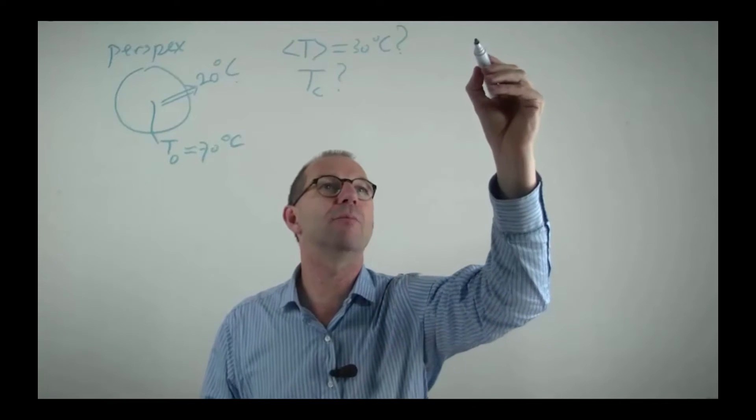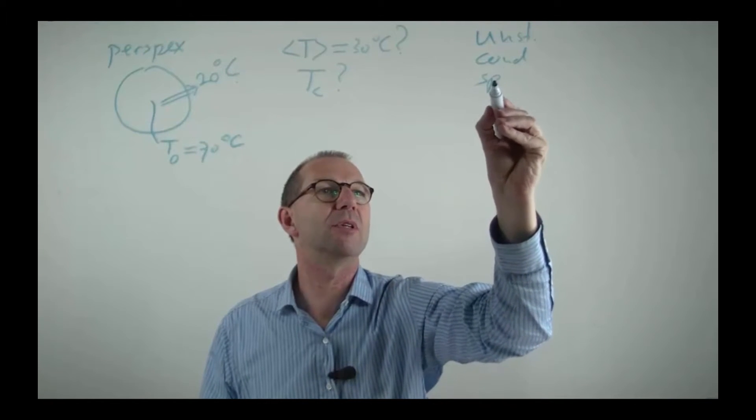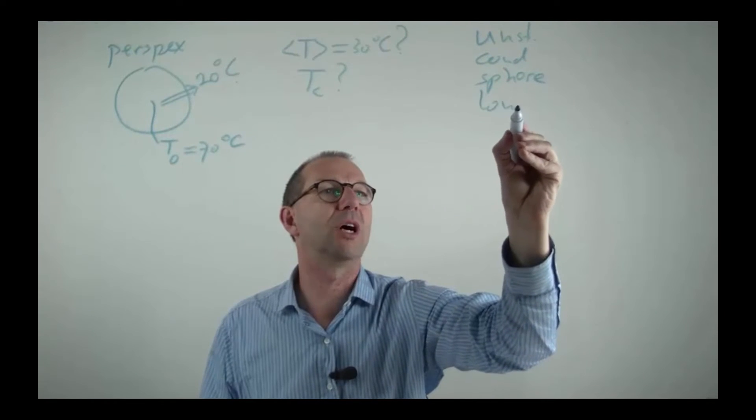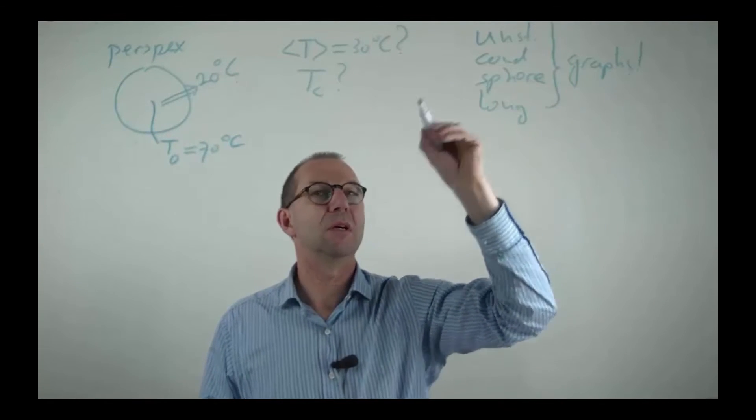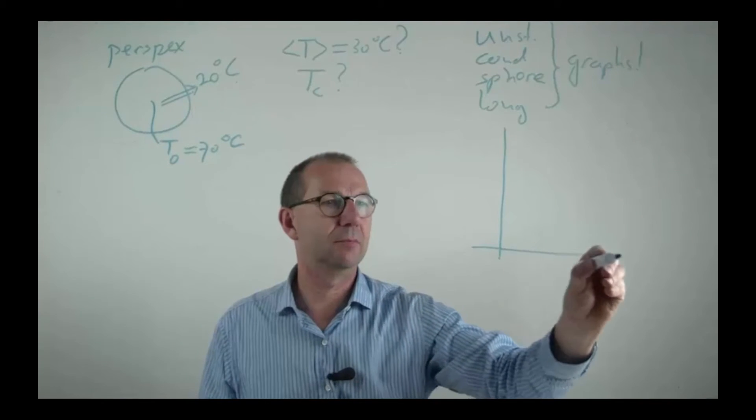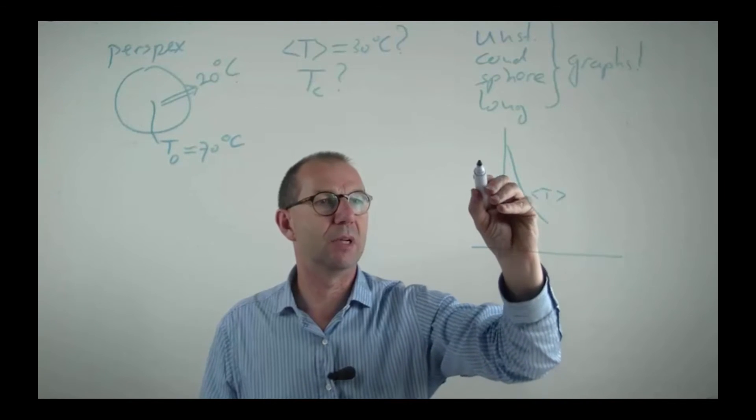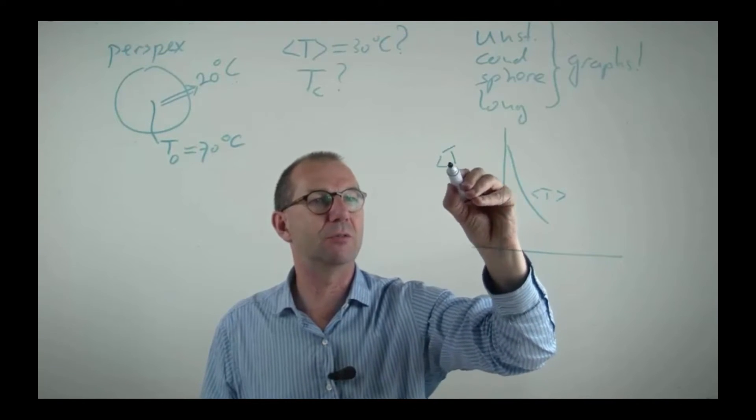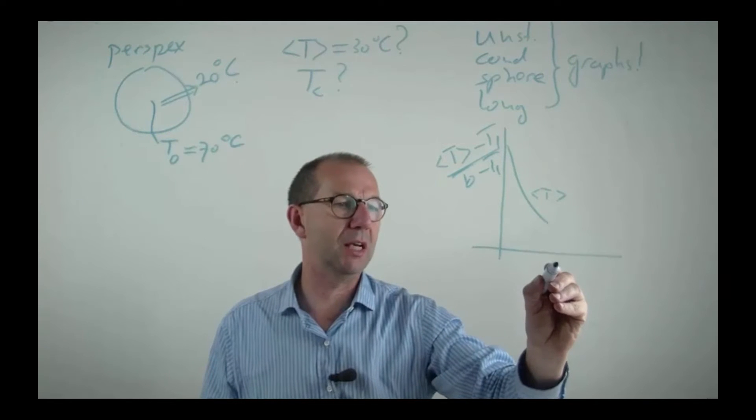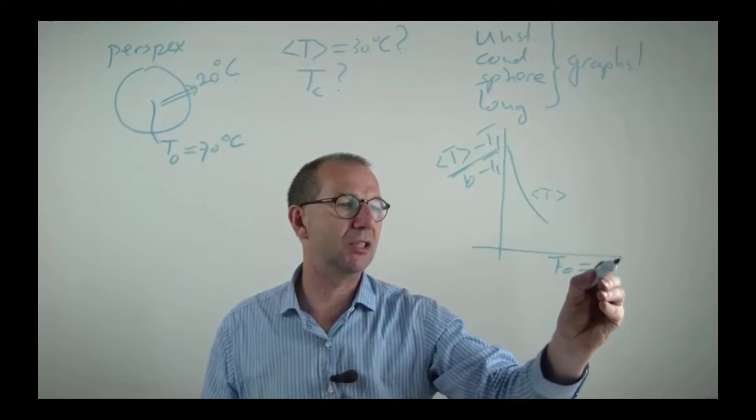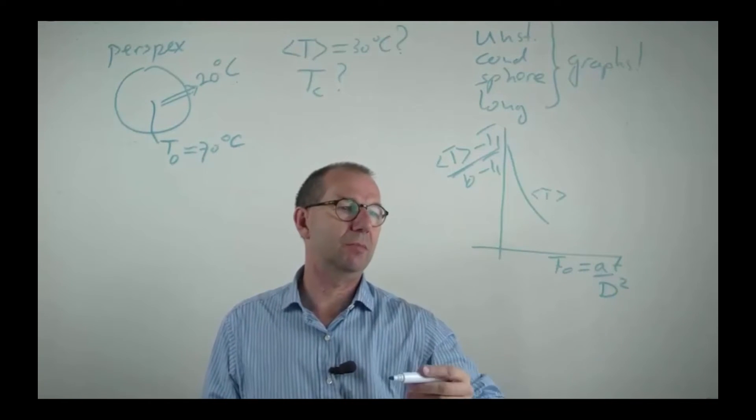So what we have is unsteady conduction from a sphere and it is long times. This means that we can use the graphs with confidence. The graph basically shows us lines of for instance the average temperature as a function of the dimensionless temperature over the Fourier number which equals At over D squared. Thus we can anticipate that we need to find A.